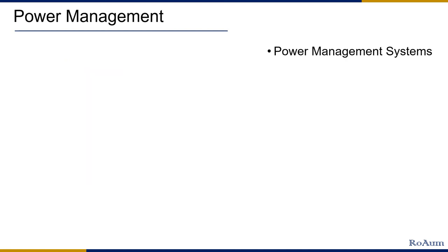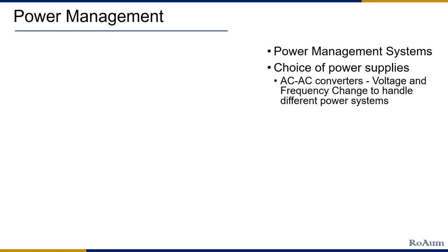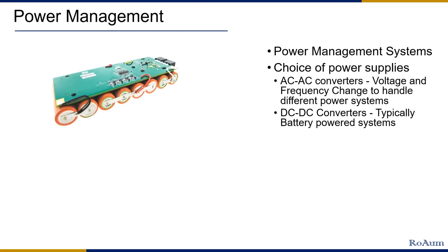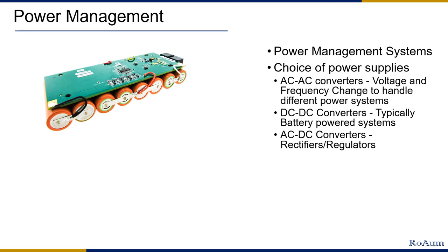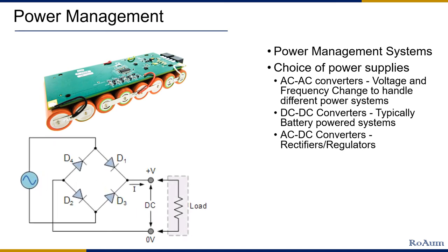Power management corresponds to the control and conversion of power to drive different electrical and electronic systems and devices. Different systems need different types of power supplies. There are mainly four types of power systems. AC to AC converters that employ voltage and frequency change to handle different power sources. DC to DC converters are used by battery power systems for deriving operating voltage. AC to DC converters use rectifiers or regulators for converting mains AC to DC. DC to AC converters use inverters for driving AC load using stored DC.